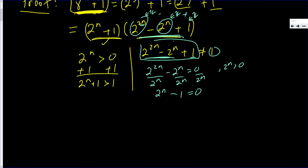What does that tell me? That 2^n = 1, which implies that n = 0. I don't want 2^n to be 1, which means I don't want n to be 0. But that's okay, because n is at least 1.